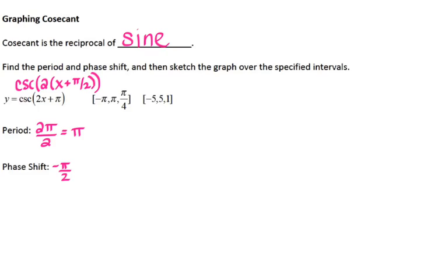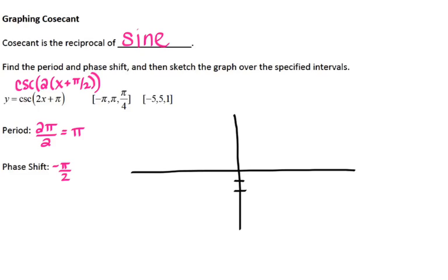The phase shift for this is going to be negative π/2. From there we can use the calculator to sketch our graph. My y-axis goes from negative 5 to 5, and my x-axis goes from negative π to π, scaling it by π/4's — so 1π/4, 2π/4, 3π/4, and 4π/4 which is π. Same thing on the negative side.